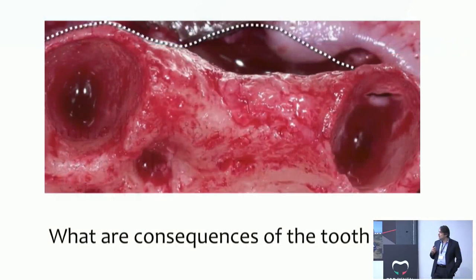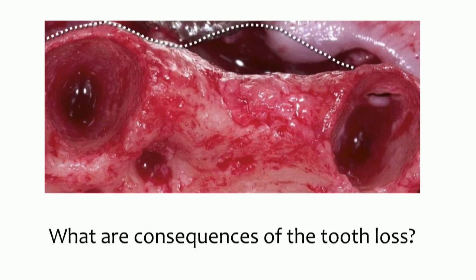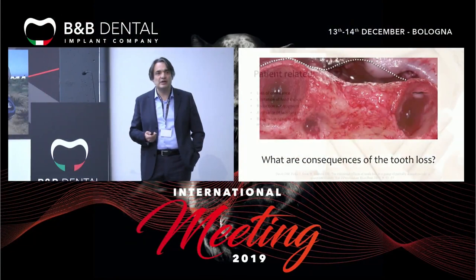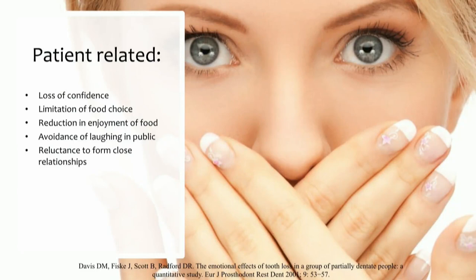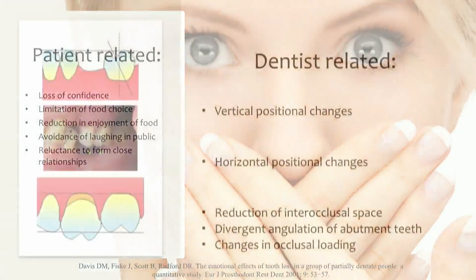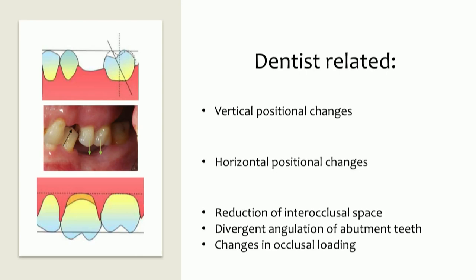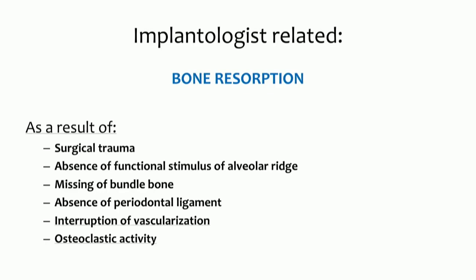Before presenting cases, we need to know what happens after tooth extraction and the consequences of tooth loss. There are many consequences: first, related to the patient — loss of confidence, limitation of food choice, and factors making everyday life inconvenient. Related to the dentist, we see vertical and horizontal positional changes of adjacent teeth, reduction of interocclusal space, and many other things. For the implantologist, we always see resorption as a result of surgical trauma and many associated factors.